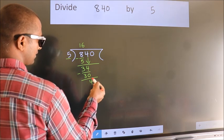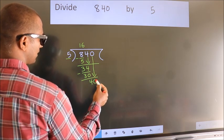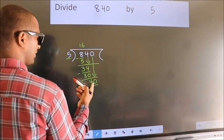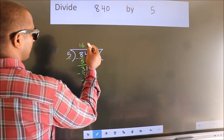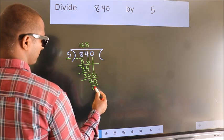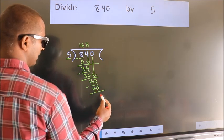After this, bring down the beside number. So 0 down, so 40. When do we get 40 in 5 table? 5 times 8. We subtract, we get 0.